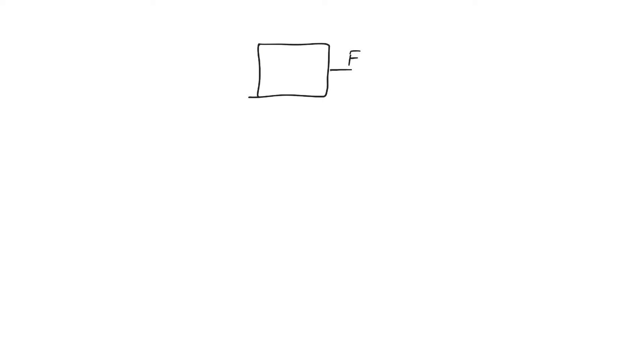First, we have to distinguish between combinational circuits and sequential circuits. So far, we have dealt with combinational circuits. The definition of a combinational circuit is a circuit whose output, F, is a function of its inputs and only its inputs.